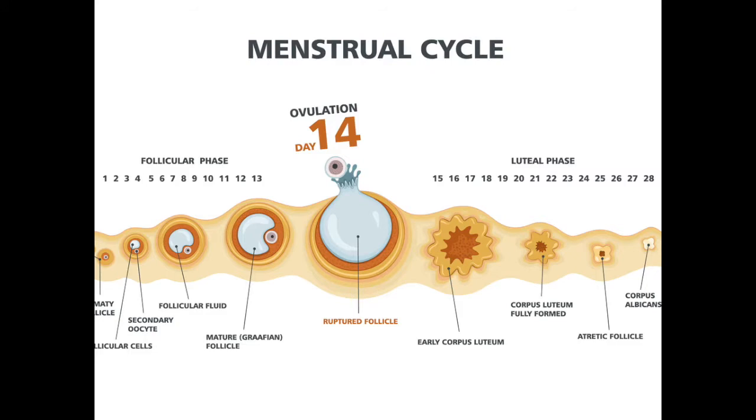One menstrual cycle is the time between two periods. In a woman who has regular periods, this is about 28 days. It can vary between two to five days, which is absolutely normal. In the first two weeks, the follicle gradually grows and leads to ovulation. Following ovulation, the next two weeks till the period is called the luteal phase.